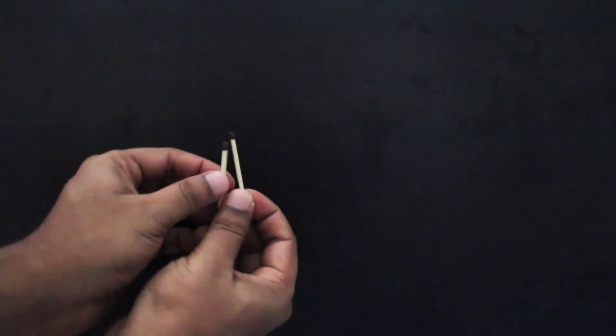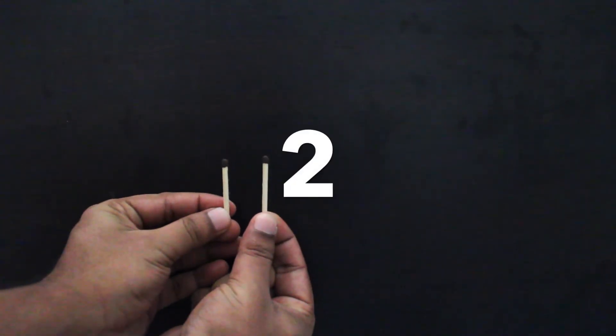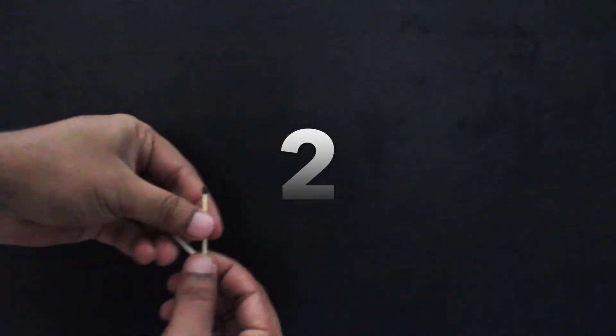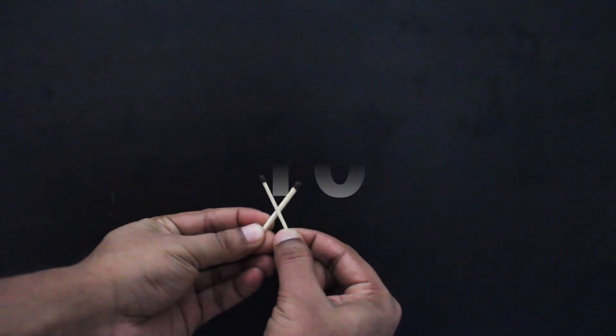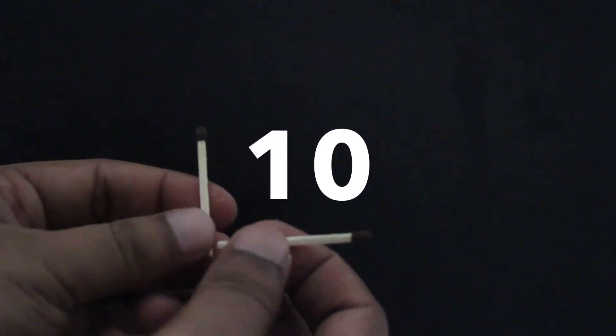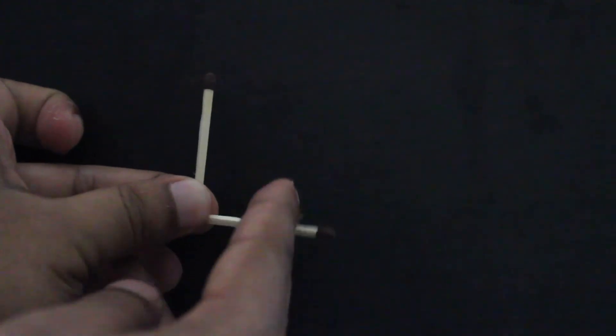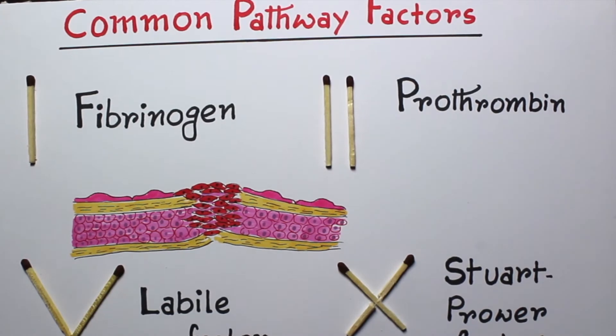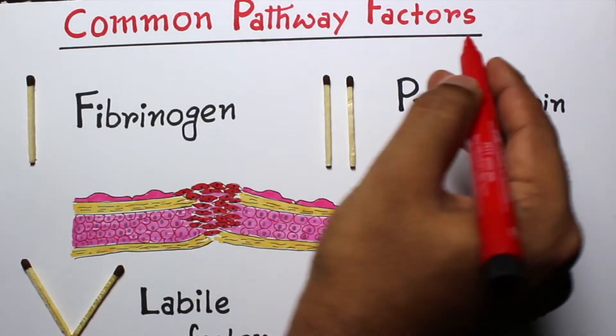Then you can make 5 and 10, and finally you can make L with these two matchsticks, which means the last factor, or factor 13. One final review.